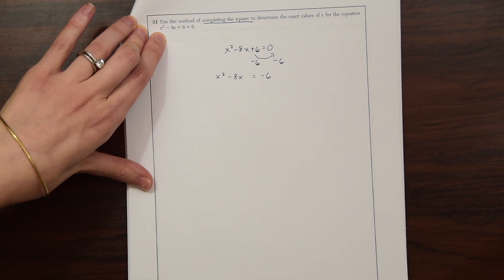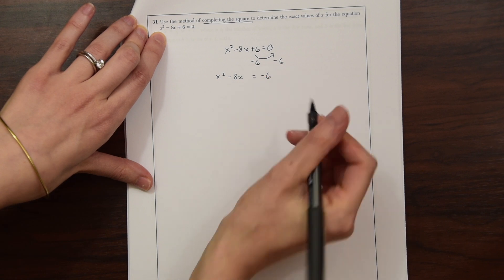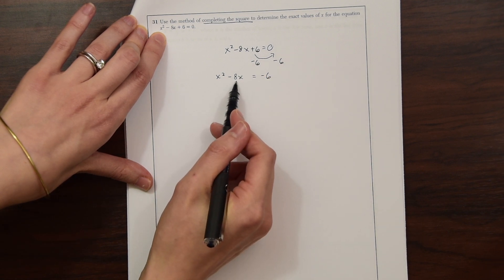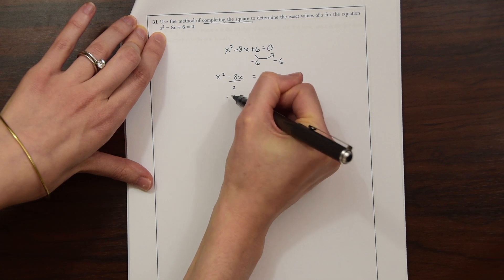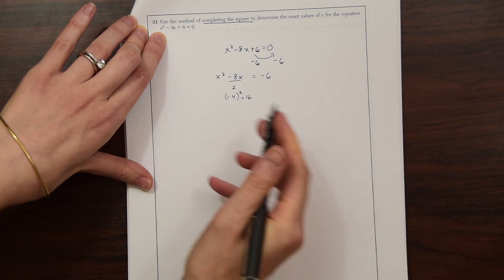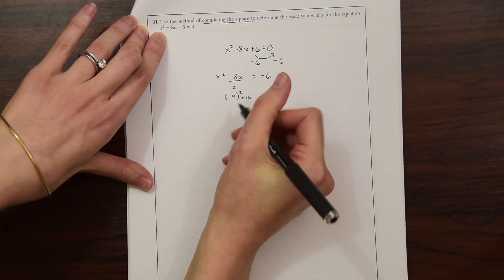So now here's the kind of tricky part that a lot of people forget about. We're going to divide this middle number here, the b value, divide it by 2, we get negative 4. And then we're going to square it, which gives us 16. And this is going to be our magic number that we're going to be adding to both sides.